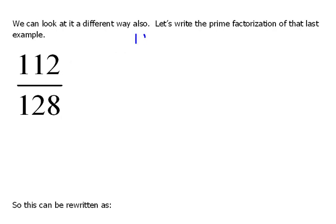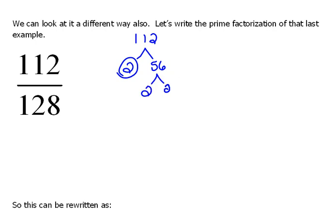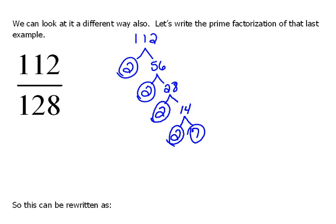Let's write 112 as its prime factors. Remember, we do that factor tree — we think of two things multiplied together to get 112. In this case, maybe 2 times 56. Now, 2 is prime, but 56 we can break down further. 56 would be 2 times 28, and we have to break down 28. That would be 2 times 14, and 14 would be 2 times 7. So, our prime factorization of 112 is 2 times 2 times 2 times 2 times 7.